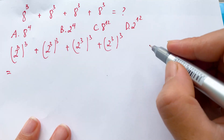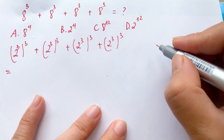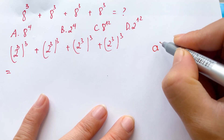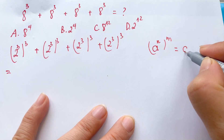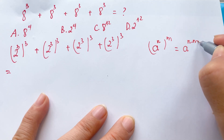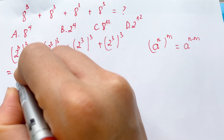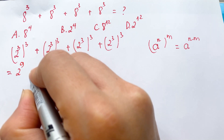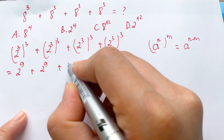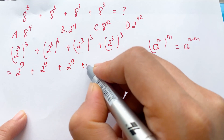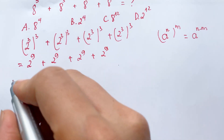This equals — everyone can see you can apply the exponential rules: a^n times a^m equals a^(n times m). Therefore we can have 2^9, plus 2^9, plus 2^9.